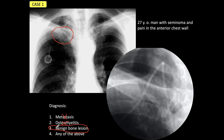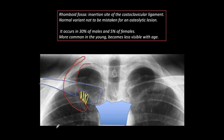The correct diagnosis should be a benign bone lesion without discussion. But this is not a normal benign bone lesion — this is a normal variant called a rhomboid fossa. The rhomboid fossa corresponds to the insertion site of the costoclavicular ligament, seen here between the first rib and the clavicle.